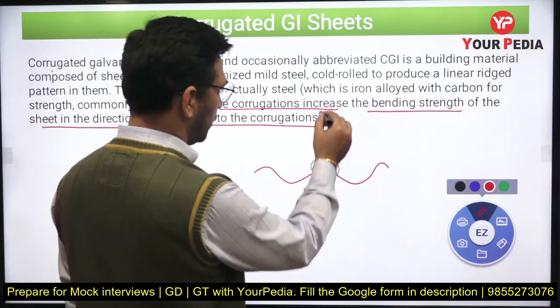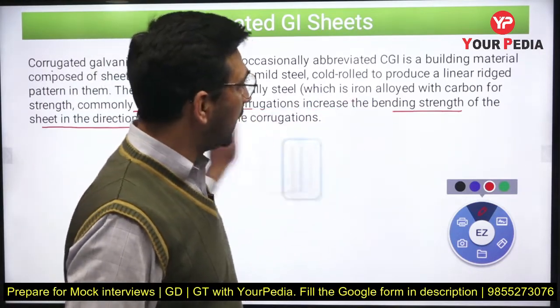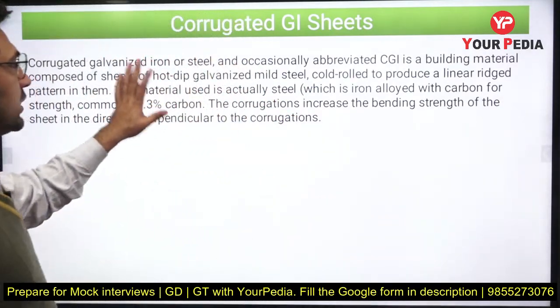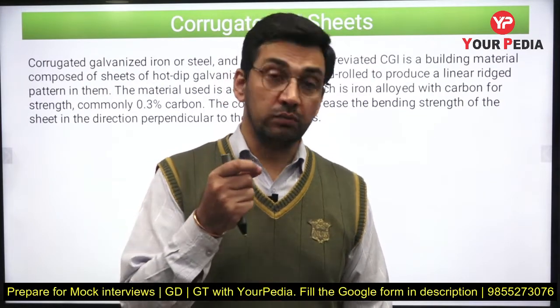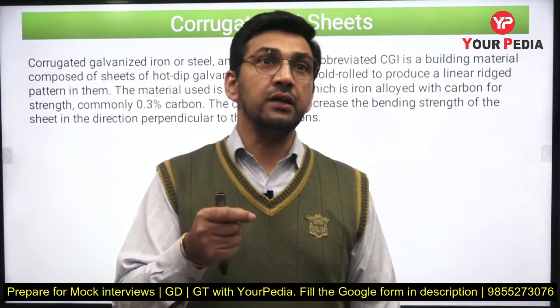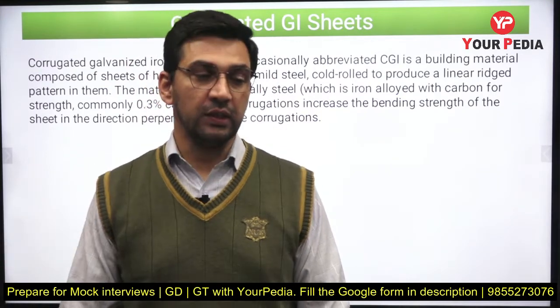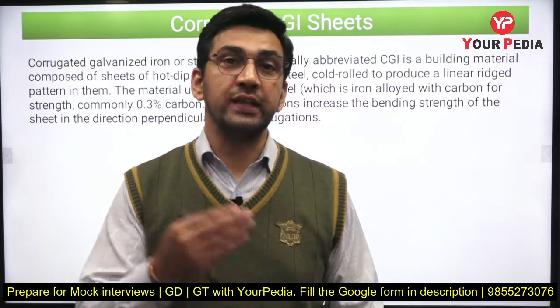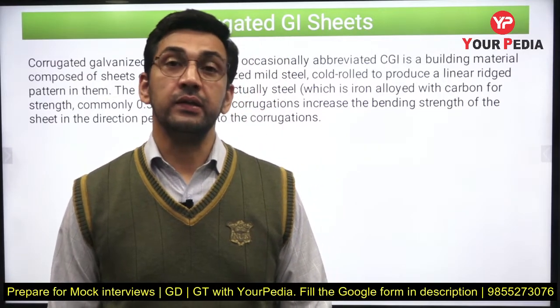The corrugation increases the bending strength in the direction perpendicular to the corrugation. For example, if you apply a load in that direction, it will not bend easily — that is the benefit. How the bending strength increases will be discussed in the next video using strength of materials concepts. So that covers what corrugated GI sheets are and why corrugation is used. See you in the next video — till then, bye, thank you.